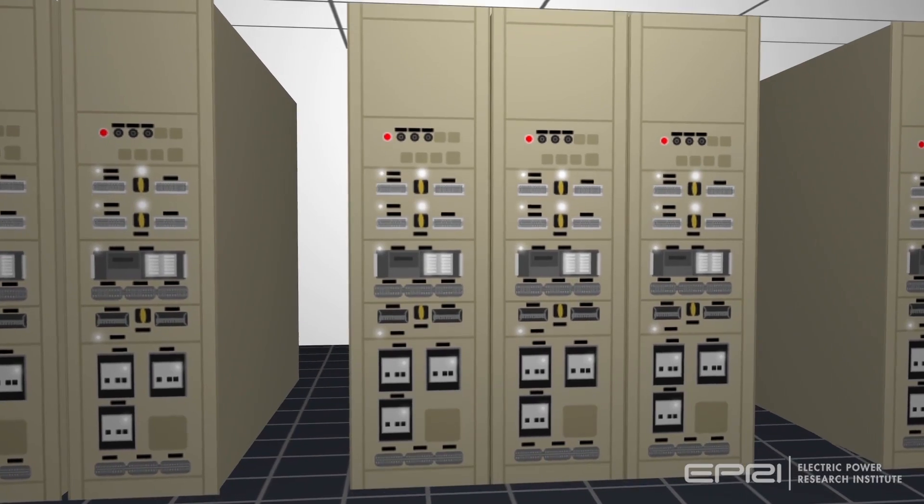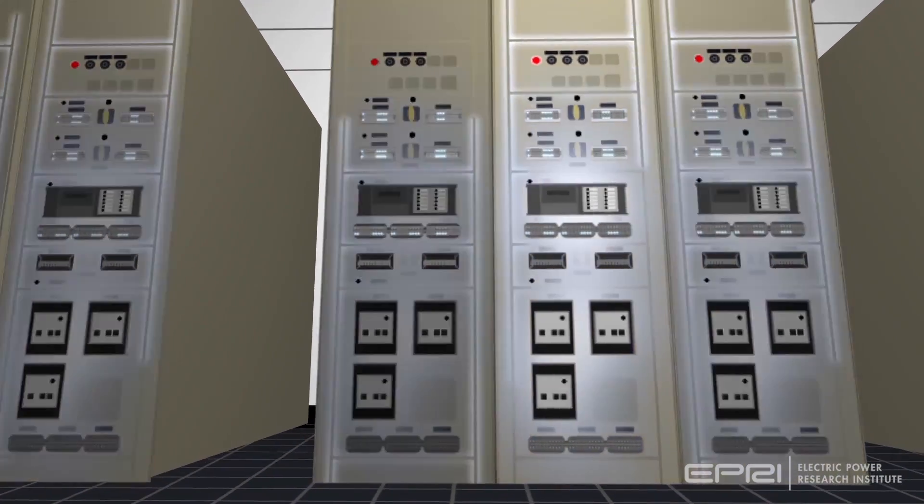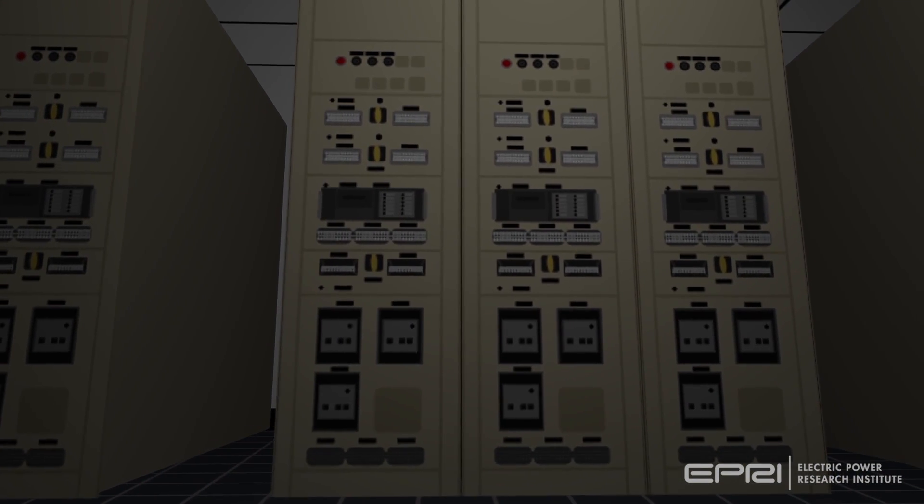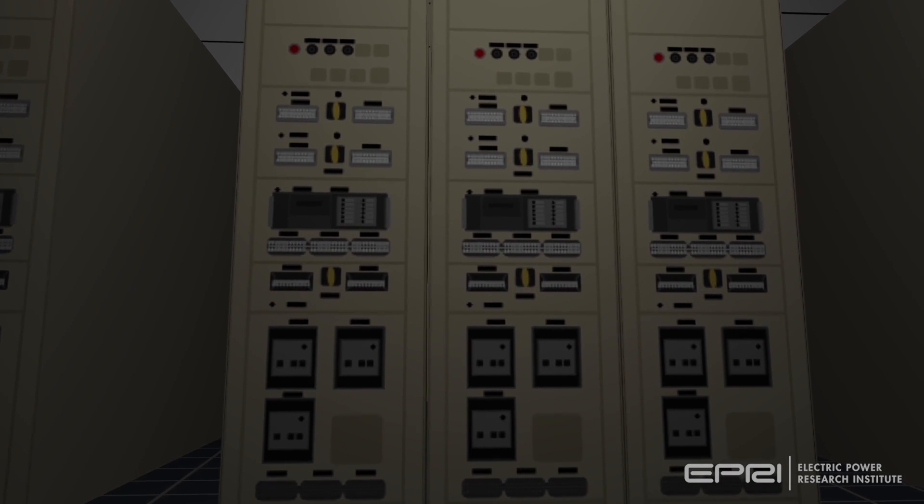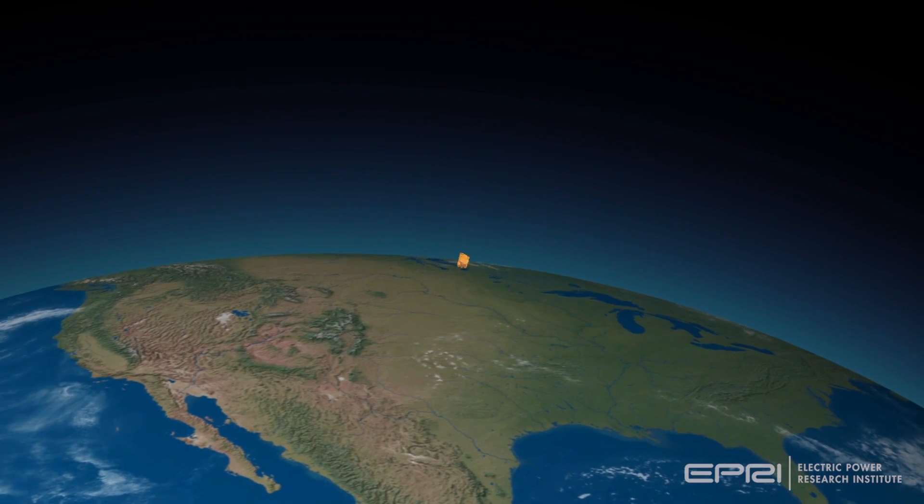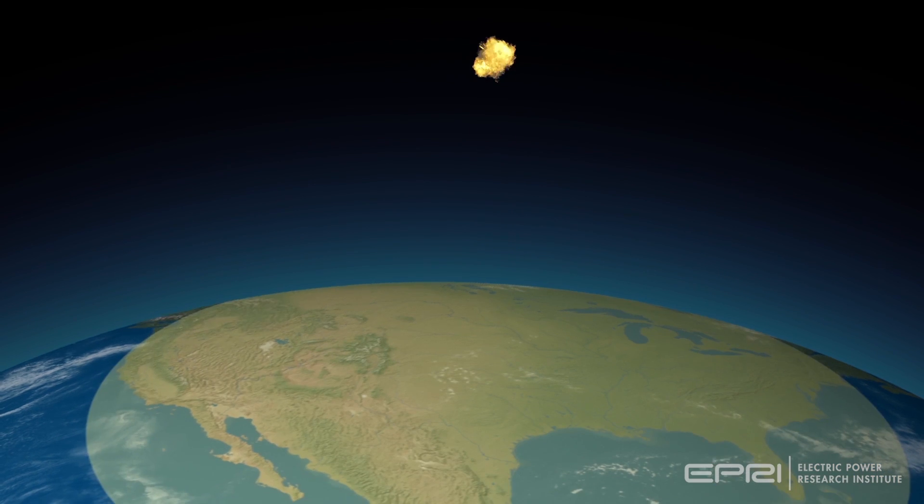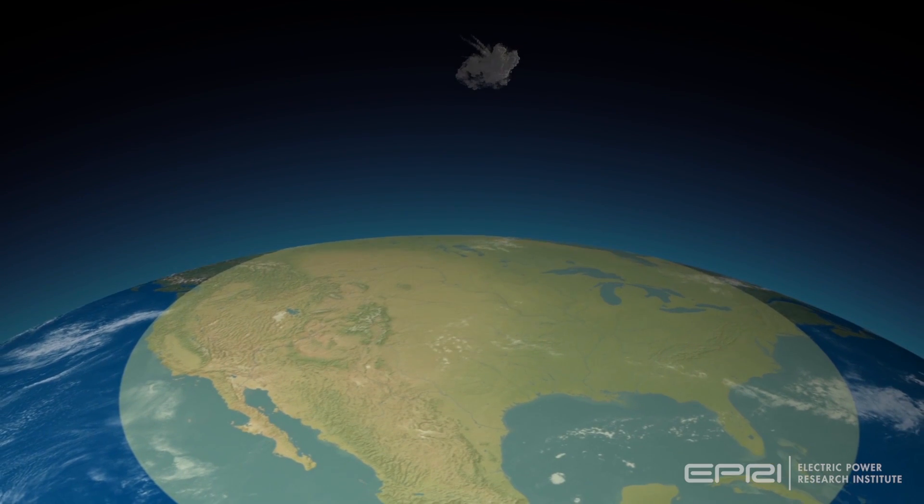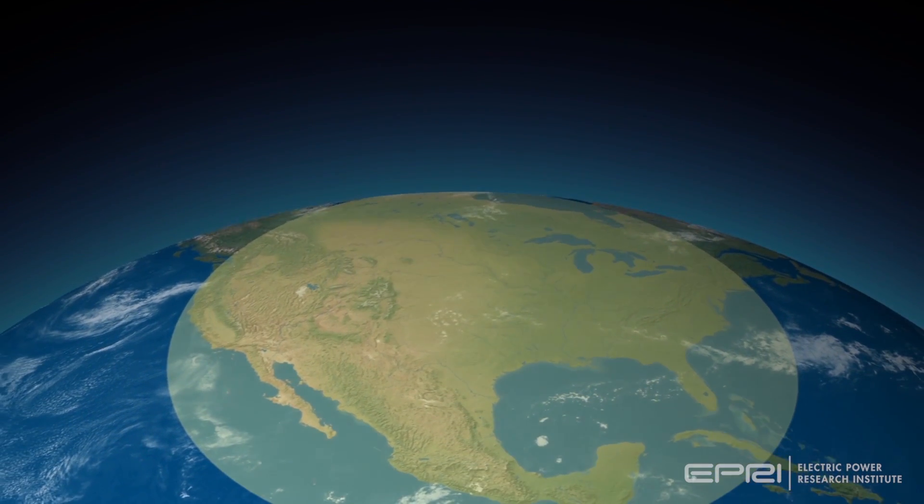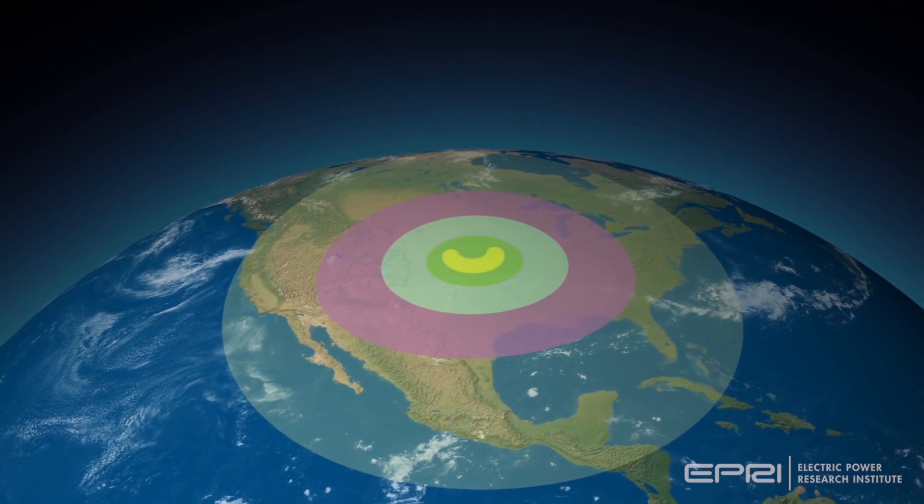E1 can result in damage to electronic components either directly or by coupling to the attached wires or cables. The area of impact can be quite large, depending on the height of burst. However, as previously shown, due to the non-uniform nature of the threat, not all areas are impacted equally.